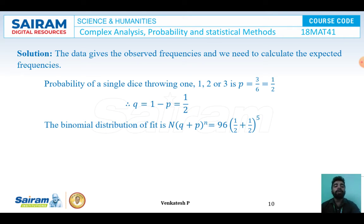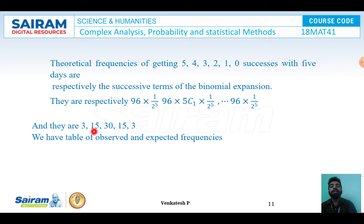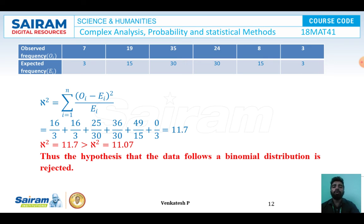Using the binomial distribution fit N(q + p)^n = 96 × (1/2 + 1/2)^5, we calculate the expected frequency for x = 5, 4, 3, 2, 1, 0. After simplifying, the expected frequencies are 3, 15, 30, 30, 15, 3. So the table has observed frequencies 7, 19, 35, 24, 8, 3 and expected frequencies 3, 15, 30, 30, 15, 3.